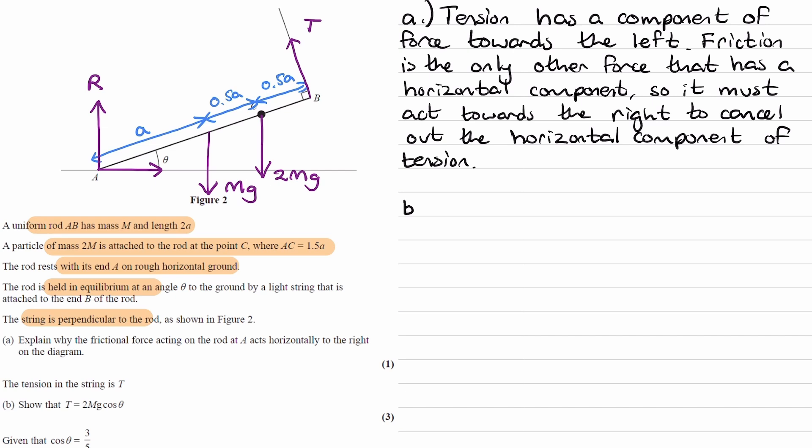Onto part B. The tension in the string is T. Show that T is equal to 2mg cos theta. So what we can do for this is take moments about point A, do clockwise moments equal to anticlockwise moments. And when we simplify that equation, we'll end up with T is equal to 2mg cos theta.